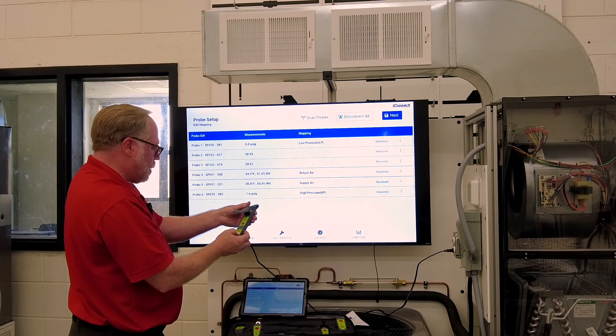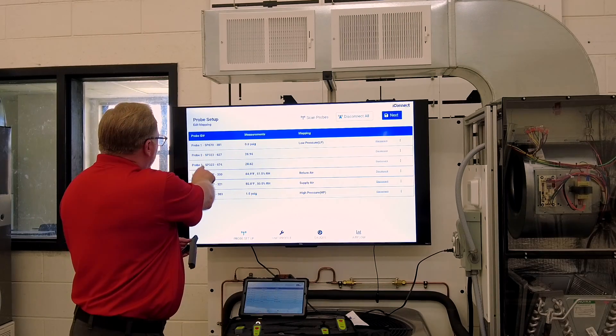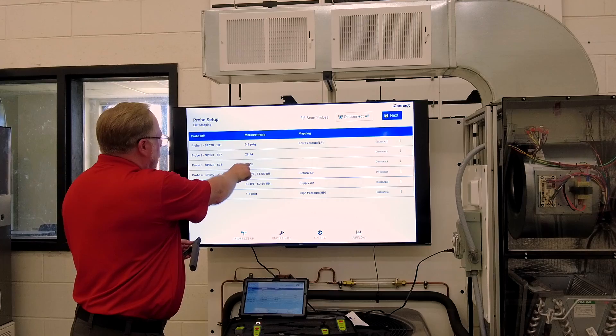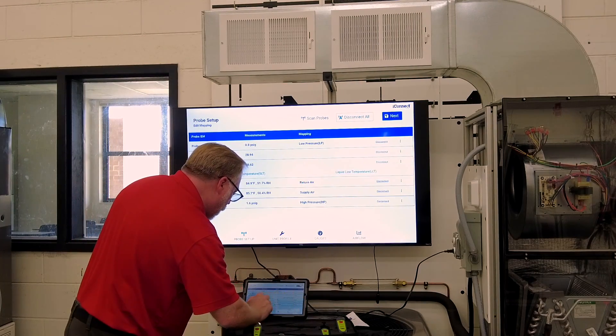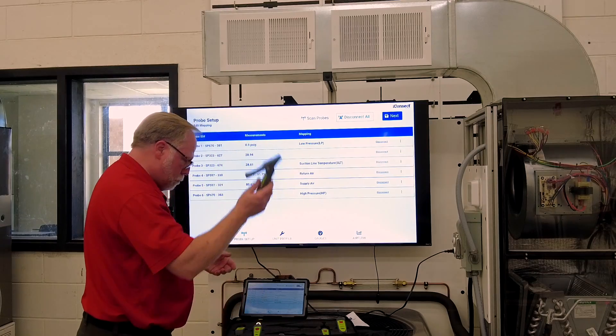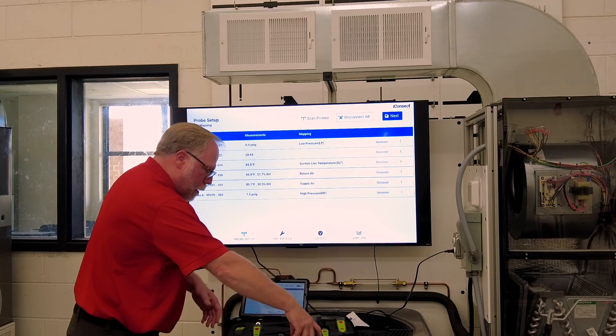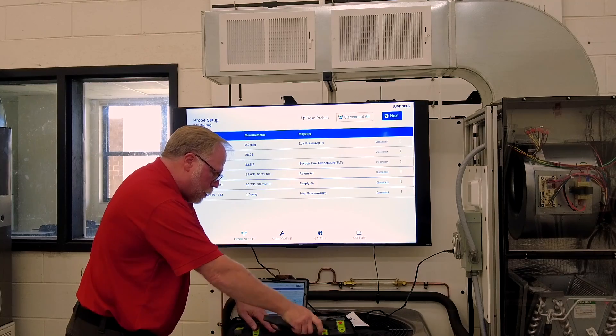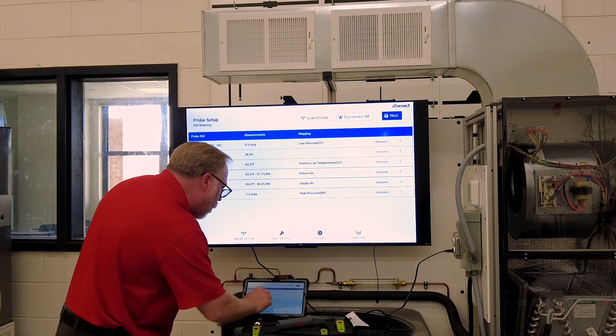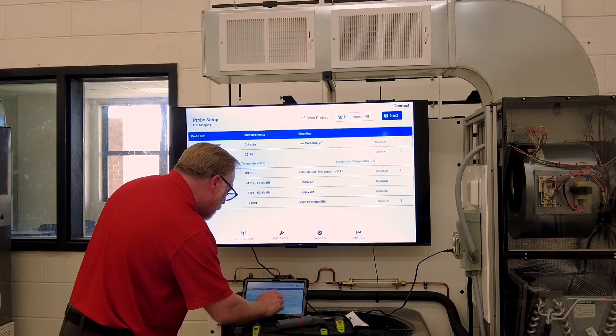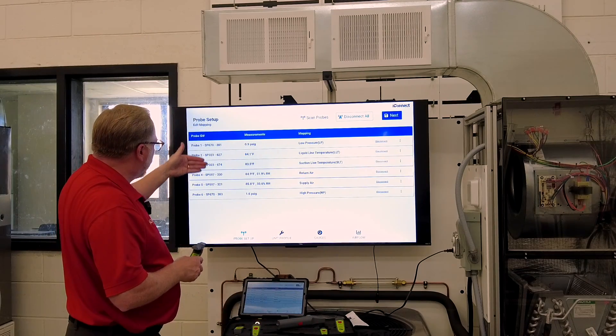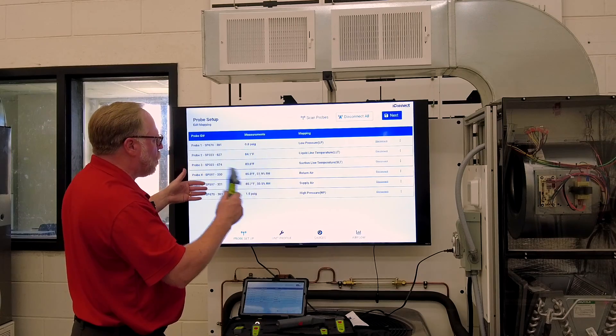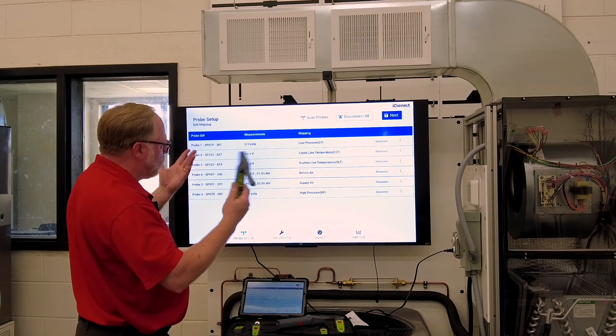And the last two is our pipe clamps here for pipe temperature. So this one is a 674. So there it is, SP323, 674. I'll go up here. I'll call that the suction line. And then I'll go to the next one and I will call that the liquid line. And there you go. So now all of my probes have been identified of what they do, what line they go on, what temperatures they measure.